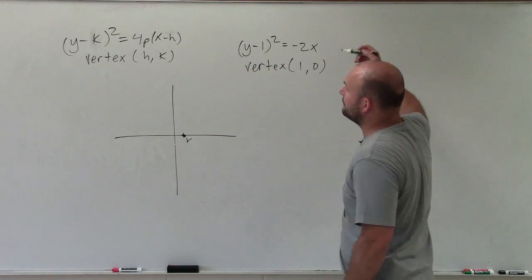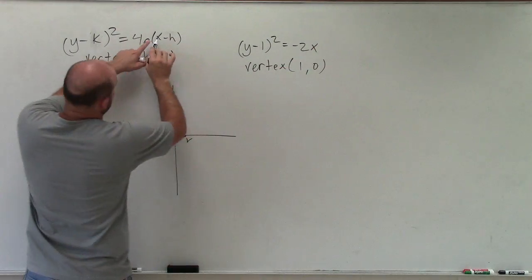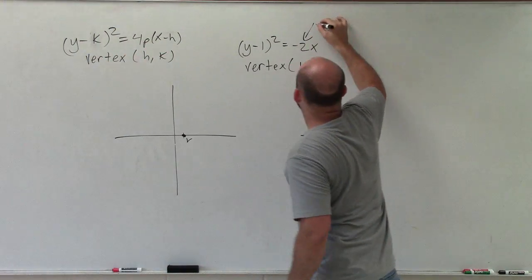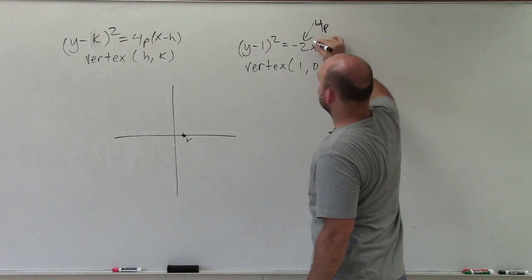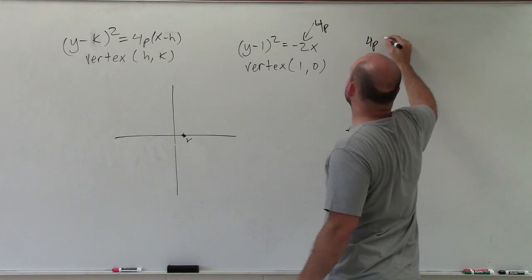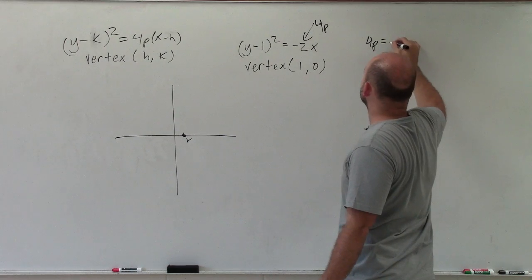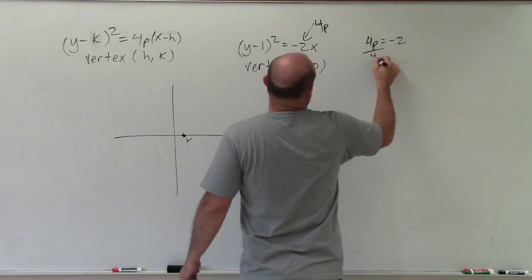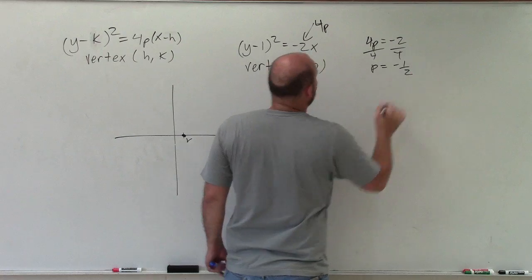So to determine p, remember 4p is what you multiply by x. Well, 4p is equal to negative 2. So let's figure out what exactly is the exact value of p. 4p equals negative 2, divide by 4, divide by 4. P equals negative 1 half.